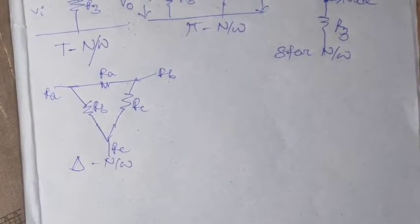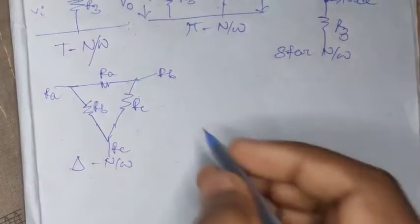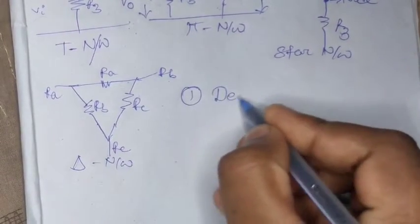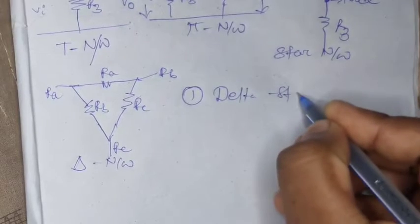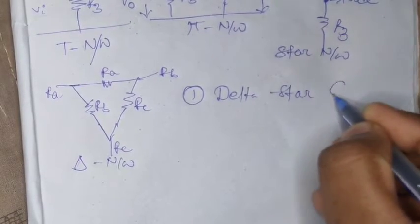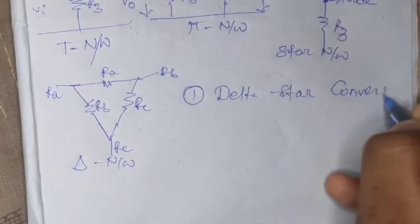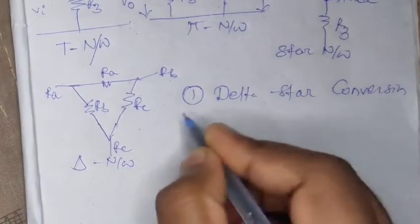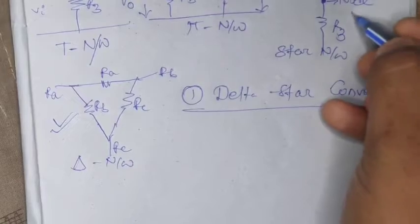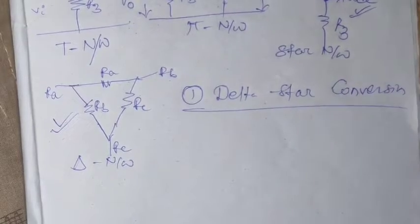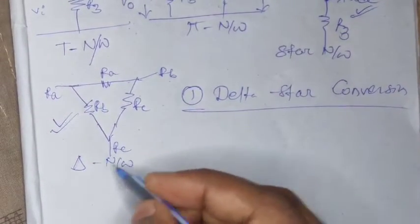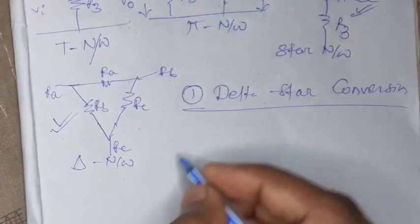Now that we have discussed all the basic terms, we will see the delta to star conversion. This is our delta figure and this is your star figure. We will now see how to convert from the delta figure to the star figure.